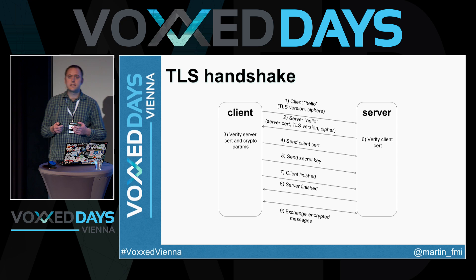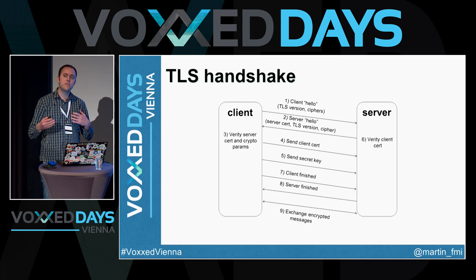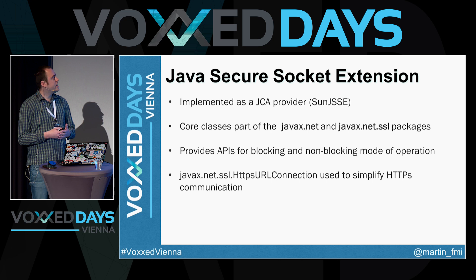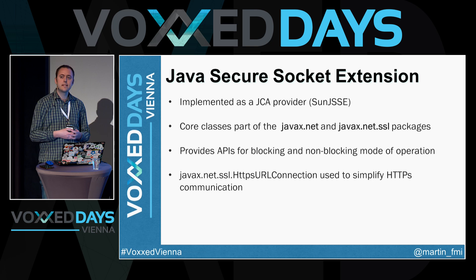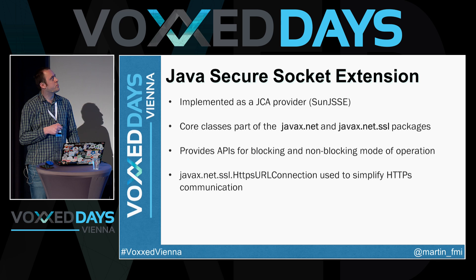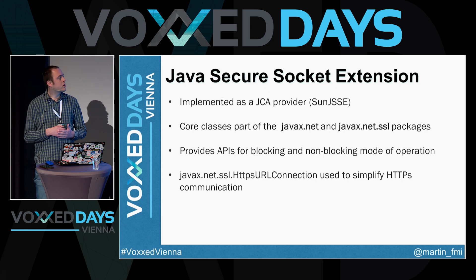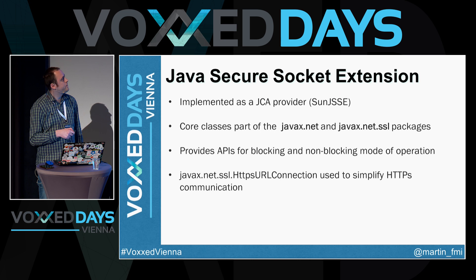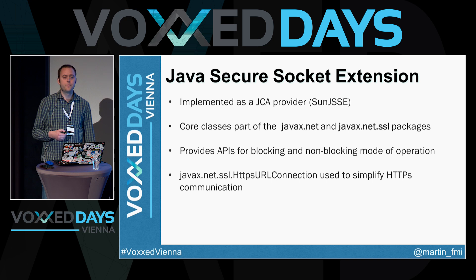The TLS handshake process has extensions provided by upcoming TLS specifications. Up to JDK 9, TLS is supported by the Java Secure Socket Extension (JSSE), which is the secure equivalent of standard Java sockets. It's implemented via the Java Cryptography Architecture provider. By default the JDK provides the SunJSSE provider. Core classes are in the javax.net and javax.net.ssl packages.